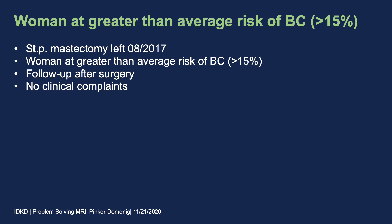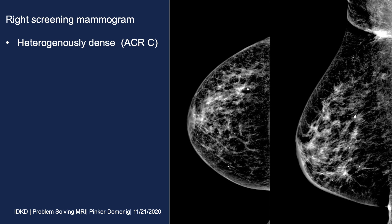She underwent a right screening mammogram and can be classified as heterogeneously dense, which limits the sensitivity of mammography in this case. As she is status post left mastectomy, we only have a right mammogram, so in addition to the heterogeneous density potentially masking subtle lesions, we are also lacking the inherent control group we usually have with respect to symmetry.